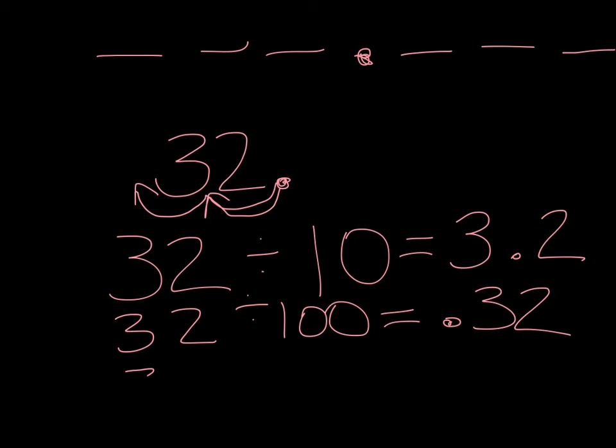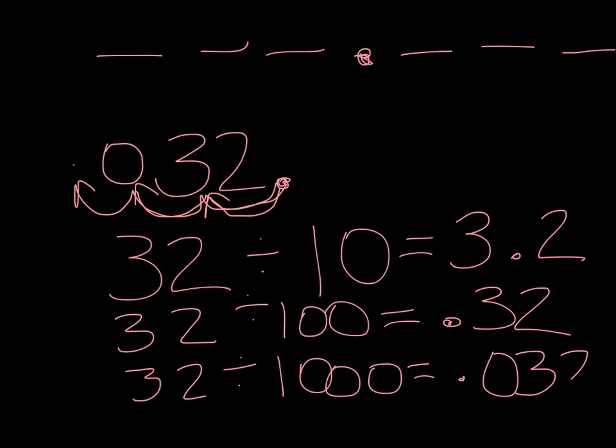If I were to take 32 and divide by a thousand, I would actually be moving my decimal three places over. So I'm actually going to have to—instead of once, twice, three times—if my decimal is now here, I have to have a zero in my tenths place. So point zero, three, two.